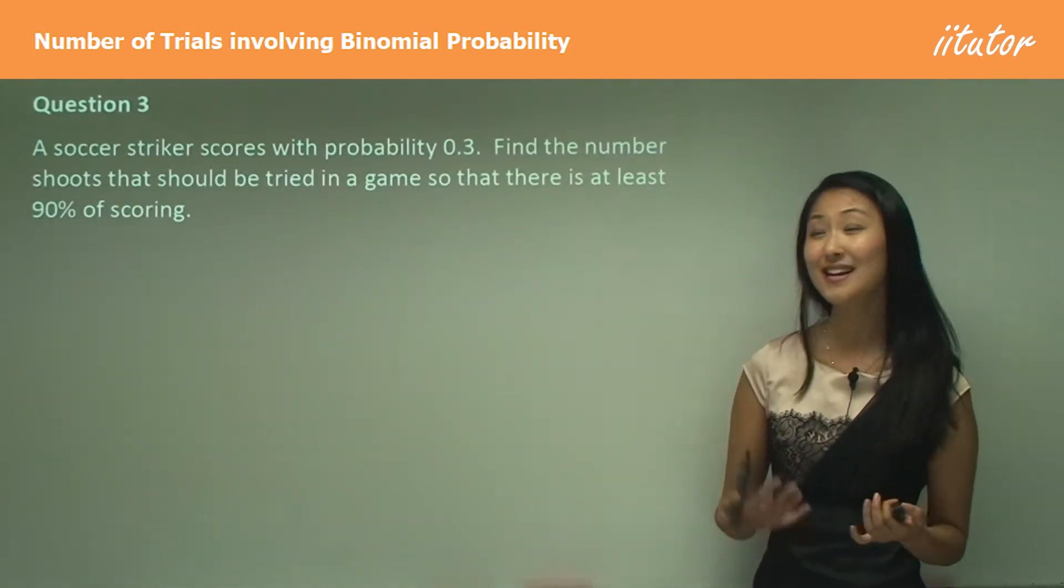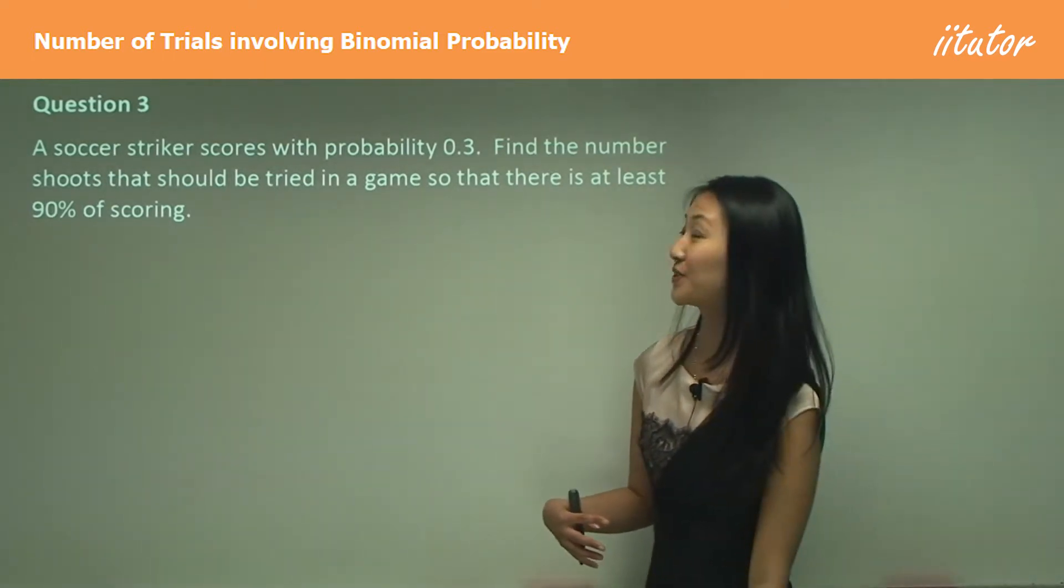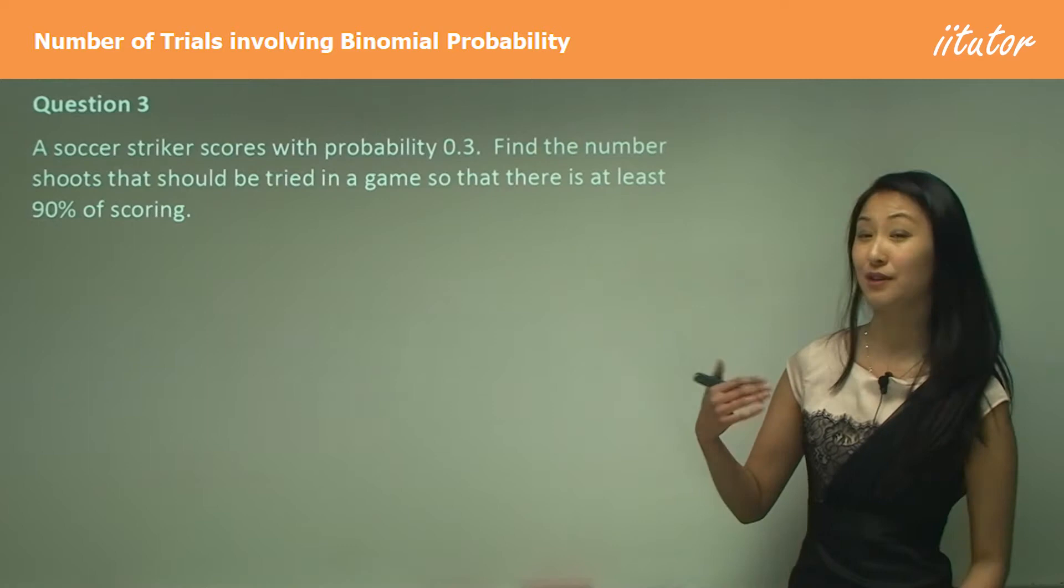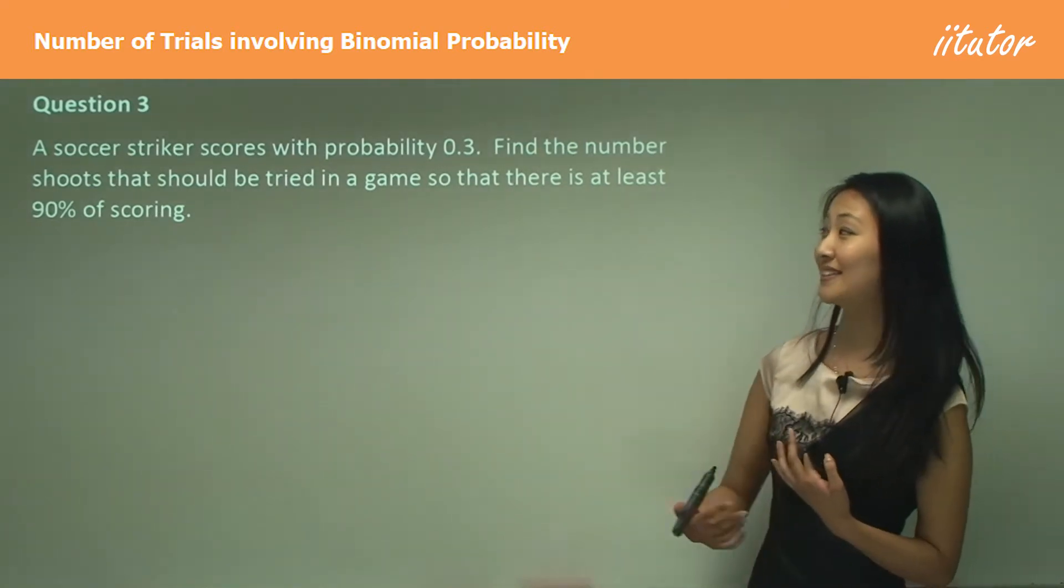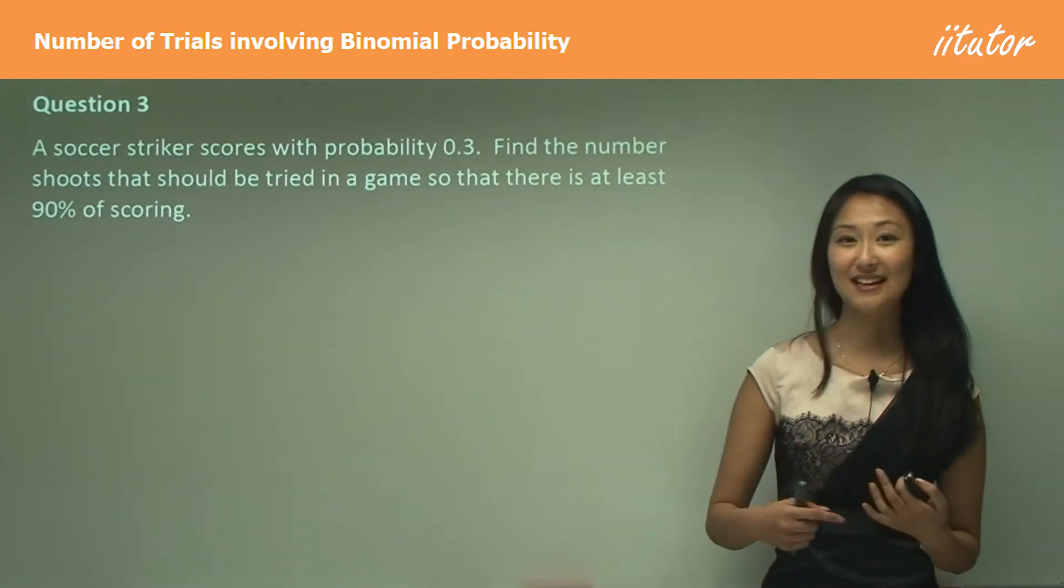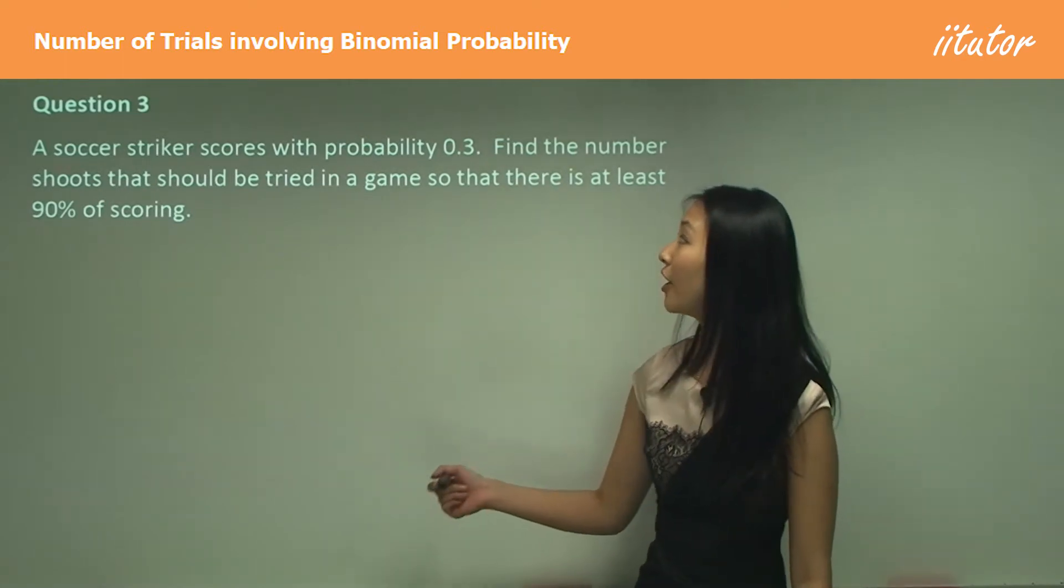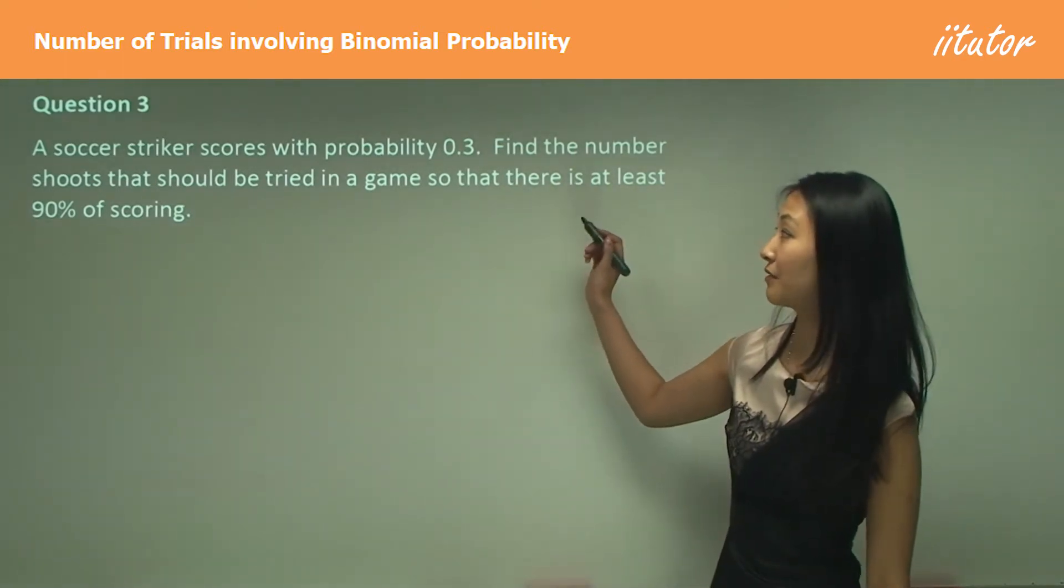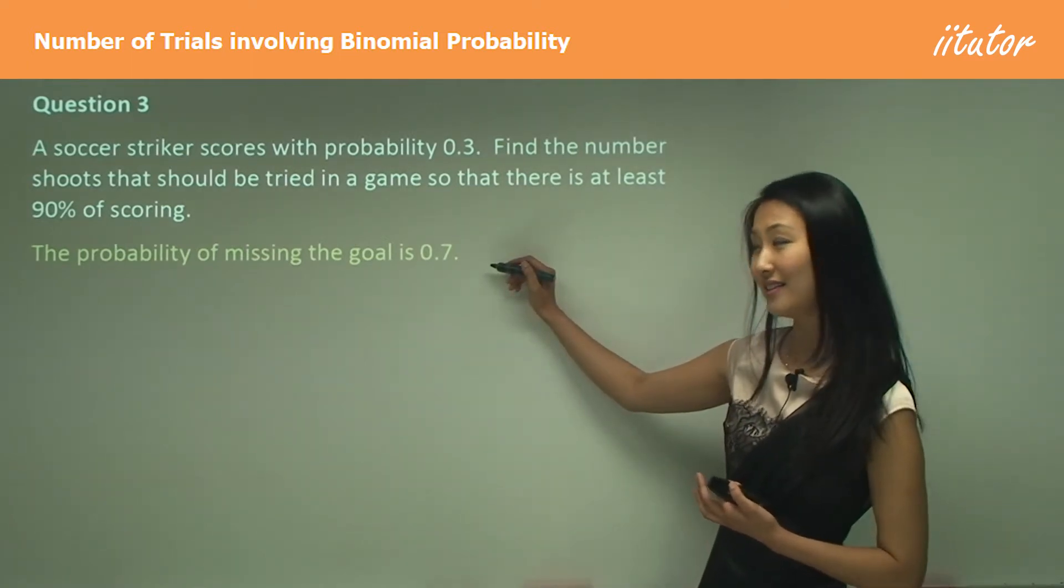In question three, we've got this great soccer player. This soccer striker scores with a probability of 0.3. Let's find the number of shoots that this soccer player needs to try in a game so there's at least a 90% chance of scoring. If the probability is 0.3 that he scores, then the probability of missing is 0.7.